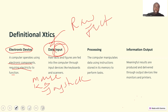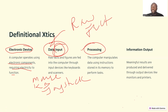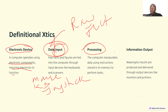Processing is the act of manipulating data. We call it data manipulation because the data will have to change its form from one form to another. For example, I can go to the farm, harvest cassava, bring it home, and change the form of the cassava.